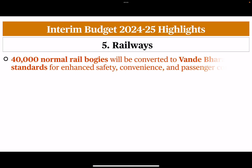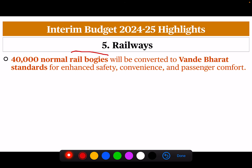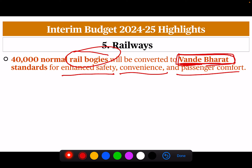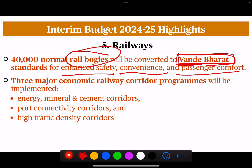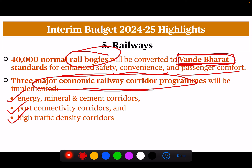Next is the railway sector. 40,000 normal rail bogies will be converted to Vande Bharat standards. Vande Bharat trains run on many routes like Delhi-Katra, Delhi-Varanasi, Delhi-Jaipur. The normal rail bogies will be converted to Vande Bharat standards for enhanced safety, convenience and passenger comfort. Additionally, three major economic railway corridor programs will be implemented: the energy, mineral and cement corridors; port connectivity corridors; and high traffic density corridors.